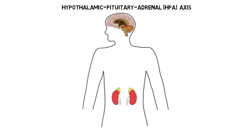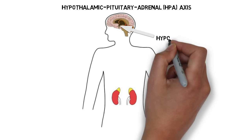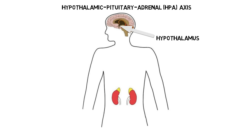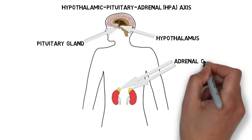The HPA axis includes a group of hormone-secreting glands from the nervous and endocrine systems: the hypothalamus, pituitary gland, and adrenal glands. The hypothalamus is a small neuroendocrine structure situated just above the brainstem that controls the release of hormones from the pituitary gland, a hormone-secreting gland that sits just below the hypothalamus. The pituitary gland can release hormones into the bloodstream to reach a variety of targets. In the case of the HPA axis, hormones released from the pituitary gland travel down to the kidneys and influence secretion of hormones from the adrenal glands, which sit on top of the kidneys.